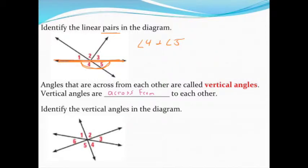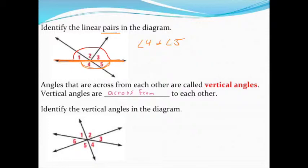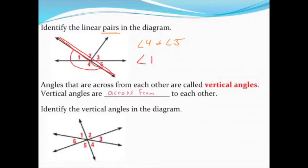Some people say angles one and two are a linear pair, but they don't make a straight line together. Others try one and three, but that's missing the middle part. Angles one, two, and three together do make a straight line, but we need a pair, so three angles won't work. There is another linear pair: looking at another straight line in the diagram, angles one and four are also a linear pair adding up to 180.